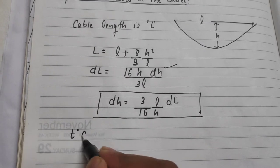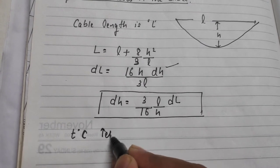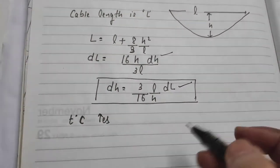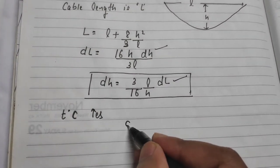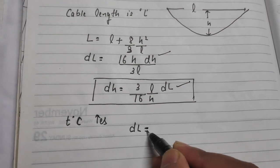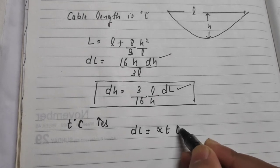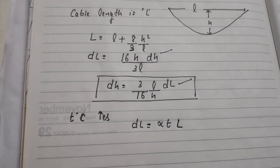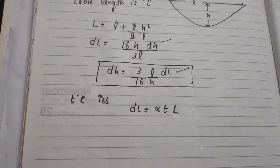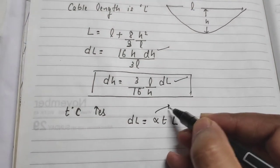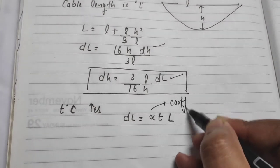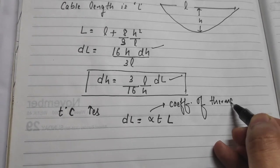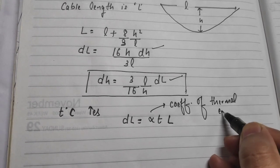If we increase the temperature by T degrees Celsius, the change in length dL equals alpha × T × L, where alpha is the coefficient of thermal expansion.